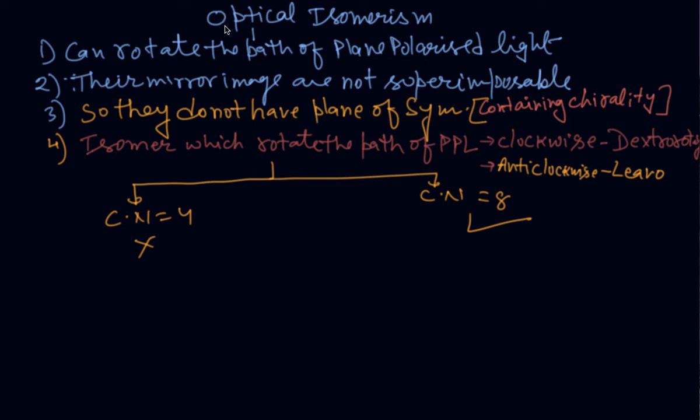Hello my dear students. Now the second part of stereoisomerism, that is optical isomerism. I was explaining you in the last class that stereoisomerism, one was geometrical isomerism and now second is optical isomerism.